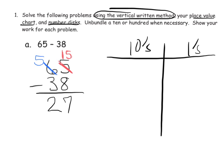So let's model this. We're going to start by modeling sixty-five on the place value chart — six tens and five ones. And now it says take away thirty-eight. Well, we clearly don't have enough ones to take away eight, so we're going to take one ten and unbundle it.